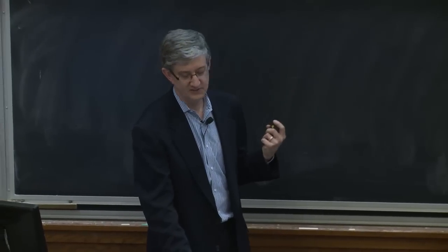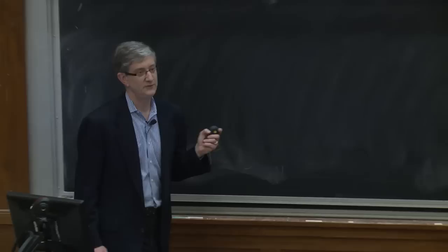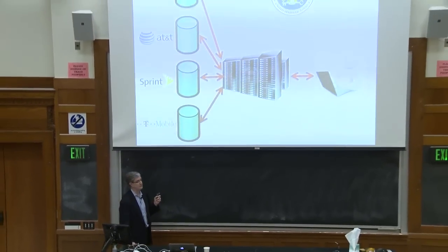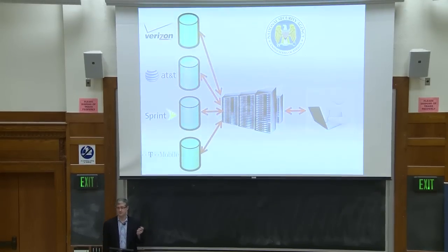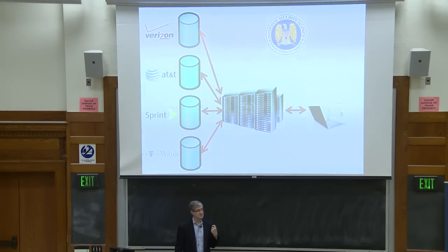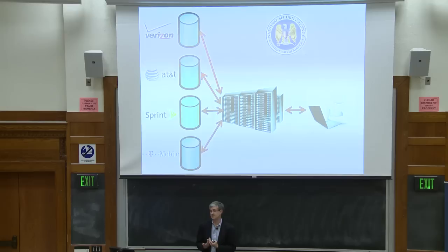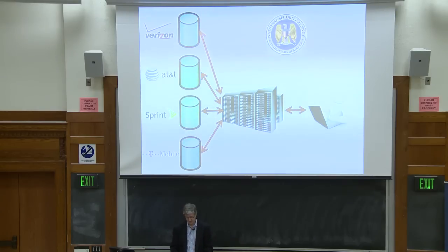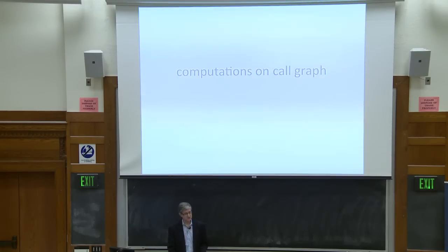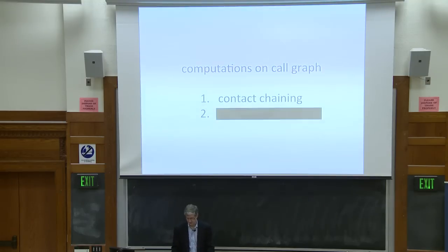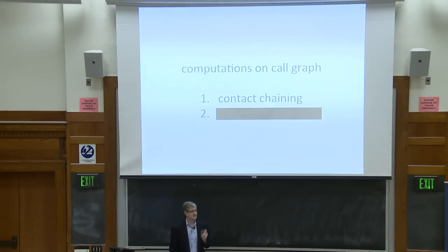Looking at the computations we know they're doing on the call graph: contact chaining can be implemented on top of breadth-first search, exploring the graph to a certain depth. They've said under oath that they don't explore beyond depth three, and now no more than two. That can be done relatively efficiently in a distributed setting by sending no more than two queries to each of the phone companies. For the redacted computation, we believe their system uses MapReduce computation — specifically a system called Accumulo, a specialized open-source version of Hadoop — which is designed to work efficiently across a highly distributed storage system.